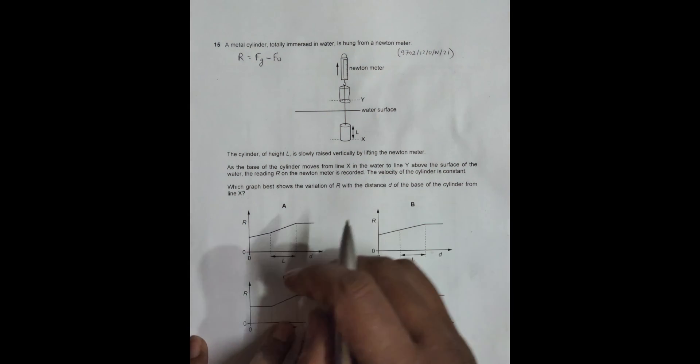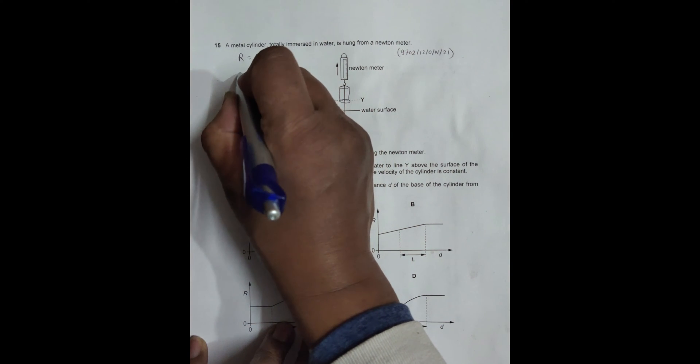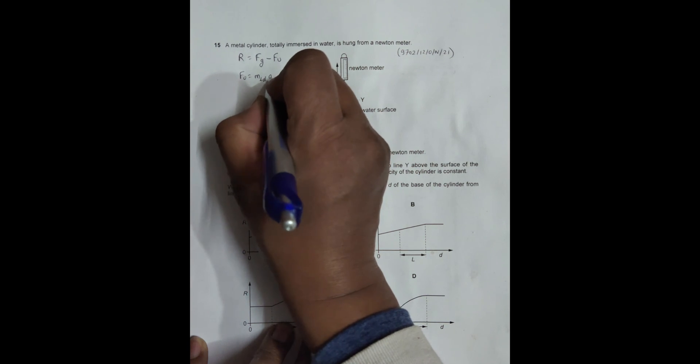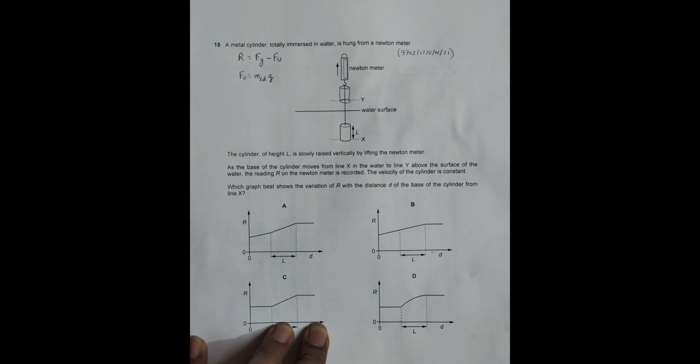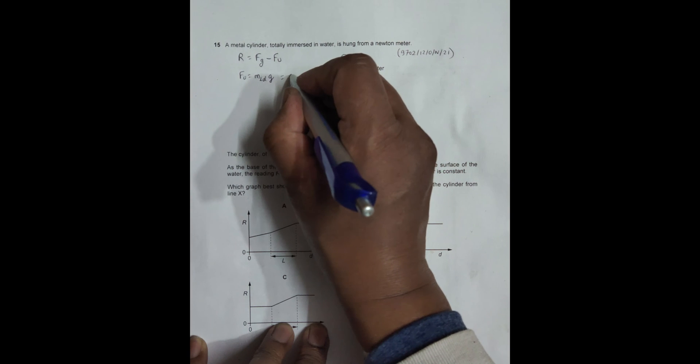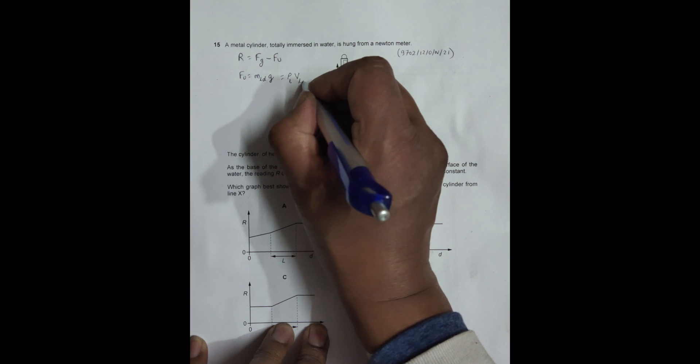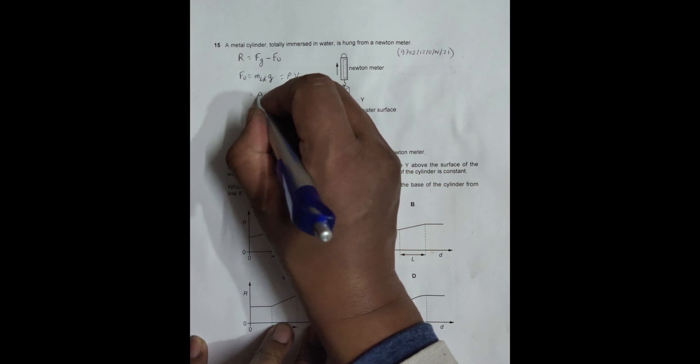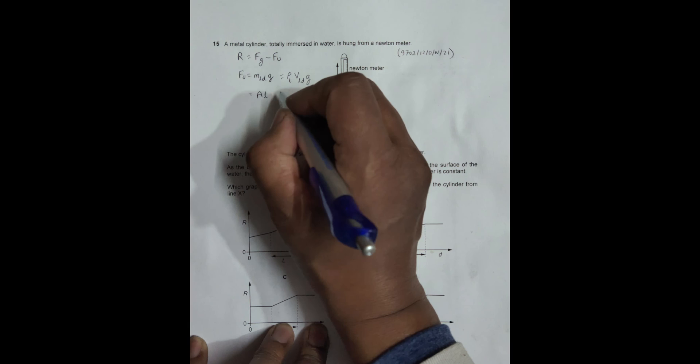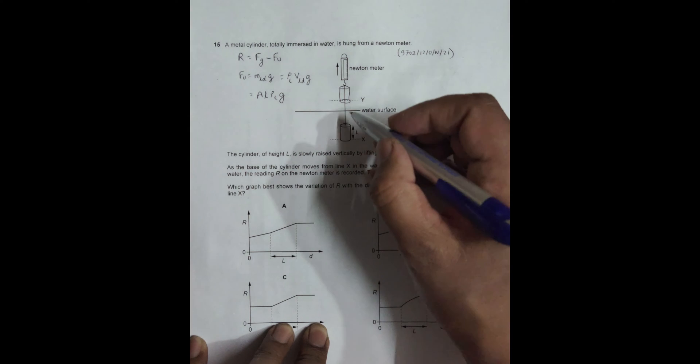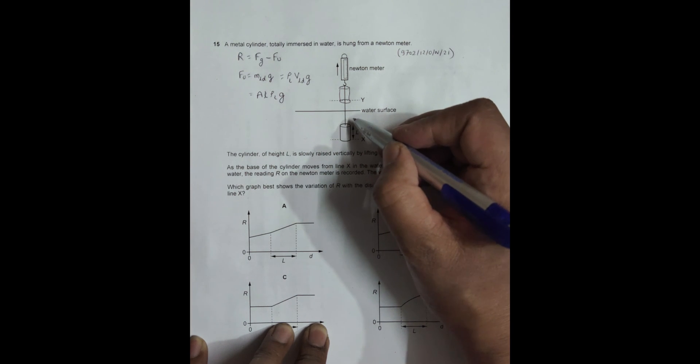The upthrust force will be FU equals mass of liquid displaced times g, that's equal to density of liquid times volume displaced times g. Volume equals cross-sectional area A into L, so it's ρ liquid × A × L × g.